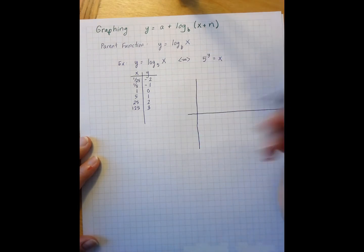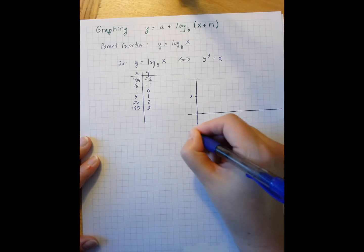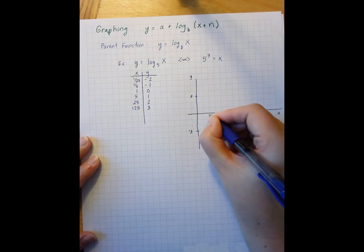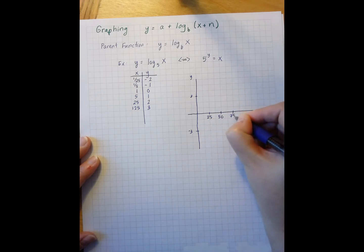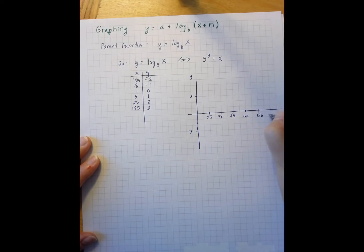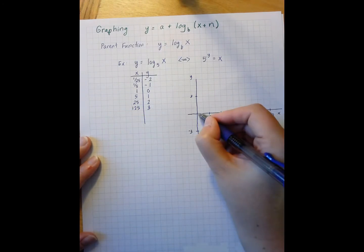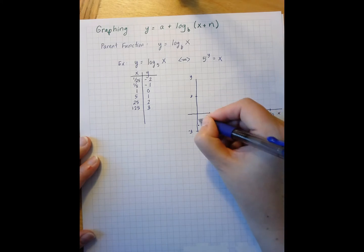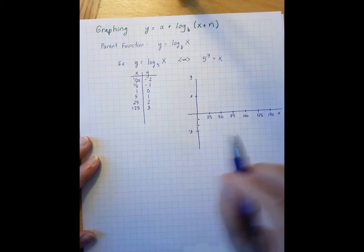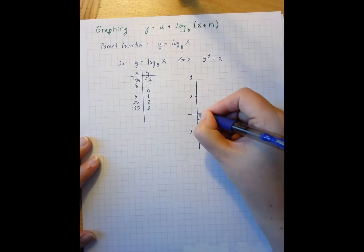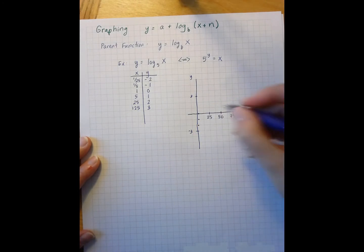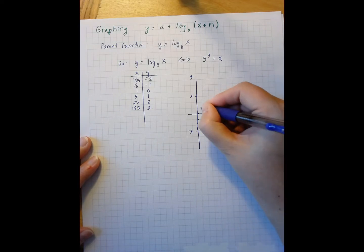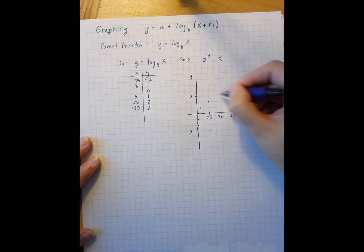For scaling, my y's I'm counting by 1s. For my x's, however, I'm going from very small to pretty big, so I'll scale by 25s: 25, 50, 75, 100, 125, 150. So at x equals 1 over 25, that's very close to the y-axis at y equals negative 2. At x equals 1 over 5, still really close, at y equals negative 1. At x equals 1, y equals 0. At x equals 5, about halfway between 0 and 25. At x equals 25, y equals 1. At x equals 125, y equals 3.